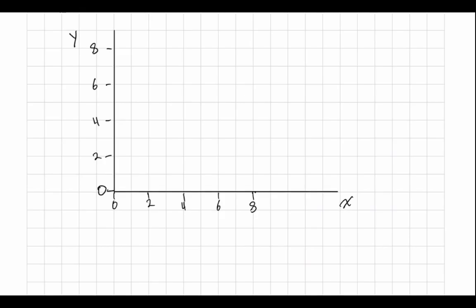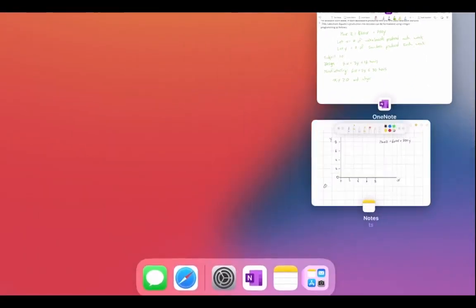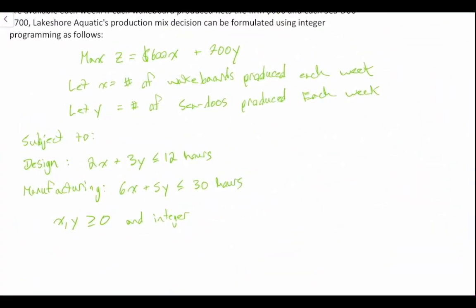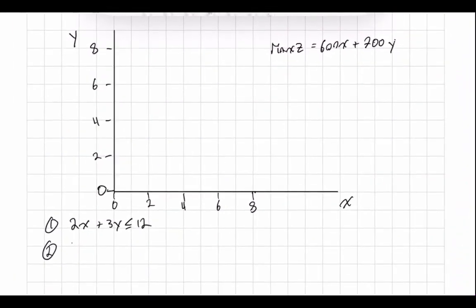We have our plane already set out. Our objective function is: max Z = 600X + 700Y, with X and Y labeled on the graph. Our two constraints are: 2X + 3Y ≤ 12, and 6X + 5Y ≤ 30, along with our non-negativity and integer constraints. Similar to previous videos, we can go ahead and plot these constraints by solving for the X and Y intercepts of each.